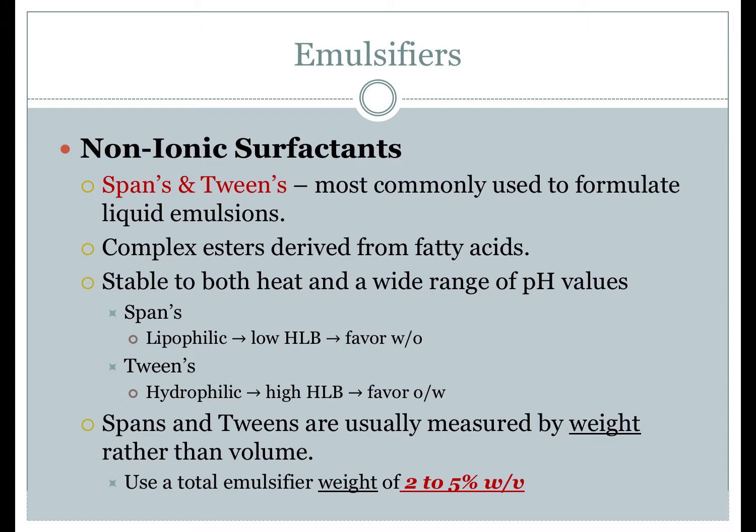The third and final emulsifier type is non-ionic surfactants. The most common non-ionic surfactants used for liquid emulsions are combinations of polysorbates and sorbitan esters, commonly referred to as spans and tweens. Spans and tweens are complex esters derived from polyols, alkaline oxides, fatty acids, and fatty alcohols. The hydrophilic portion consists of free hydroxyl and oxyethylene groups, while the lipophilic part has long-chain hydrocarbons of fatty acids and fatty alcohols. They are all actually complex mixtures of closely related derivatives.